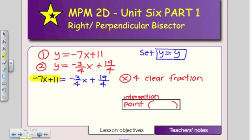Okay, by clearing the fraction, I get negative 28X, because negative 7 times 4. Remember, whatever you do to the left-hand side, you also have to do to the right-hand side. 11 times 4 is 44, is equal to negative 3 over 4 multiplied by 4 is just negative 3X. 19 over 4 multiplied by 4 is positive 19.